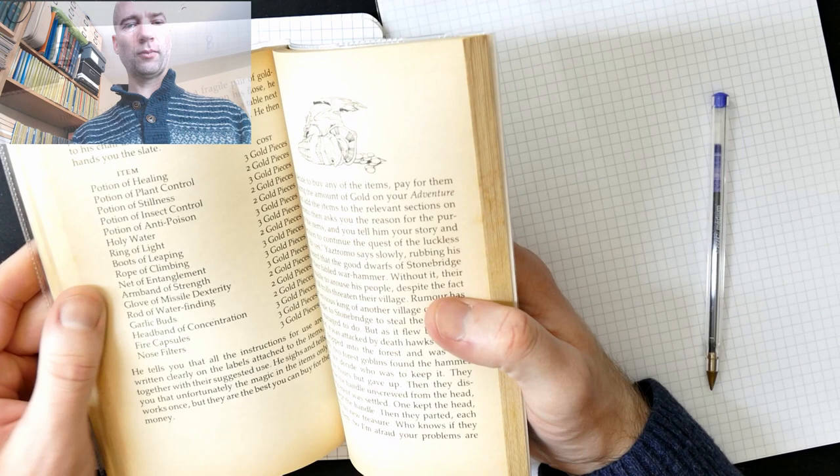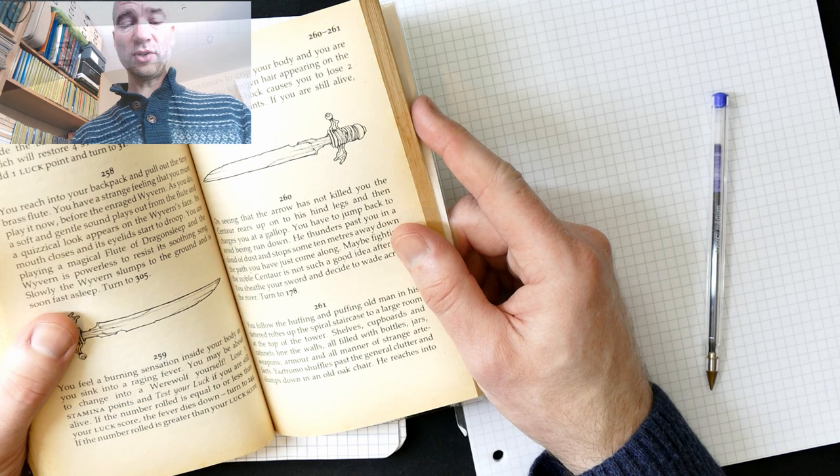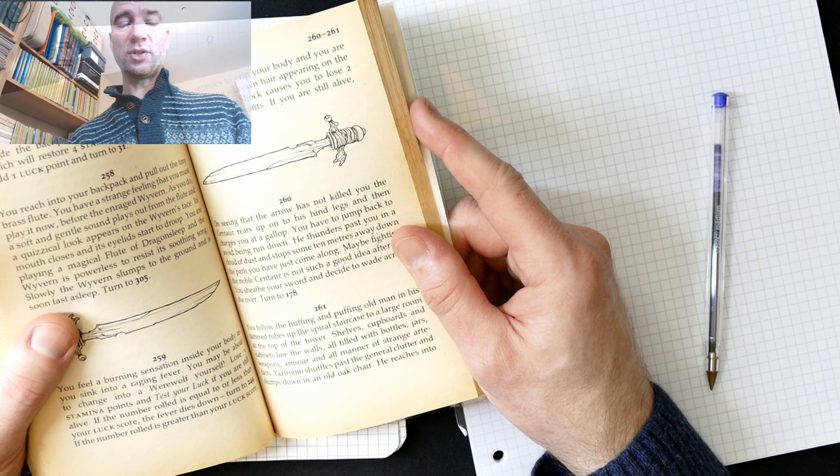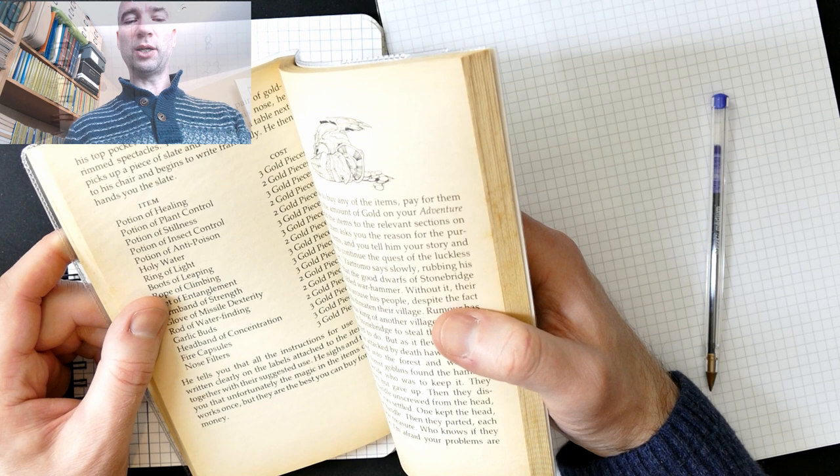Oh, that's a long one now. You follow the huffing and puffing old man in his tattered robes up the spiral staircase to a large room at the top of the tower. Shelves, cupboards and cabinets line the walls, all filled with bottles, jars, weapons, armor and all manner of strange artifacts. Yaztromo shuffles past the general clutter and slumps down in an old oak chair. He reaches into his top pocket and pulls out a fragile pair of gold-rimmed spectacles. Placing these on his nose, he picks up a piece of slate and chalk from a table next to his chair and begins to write frantically. He then hands you the slate.